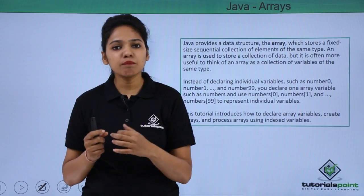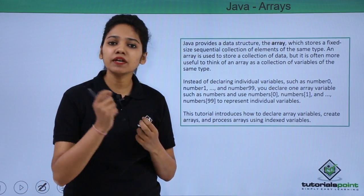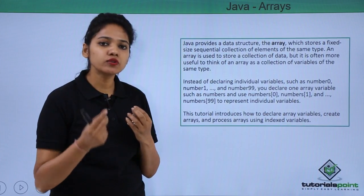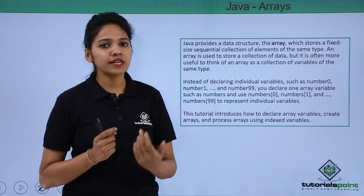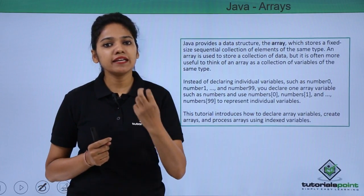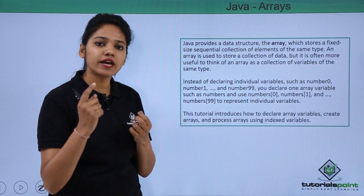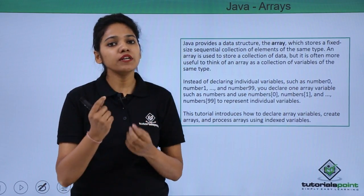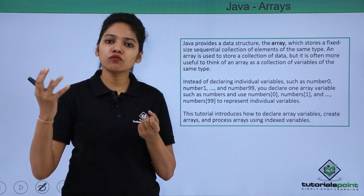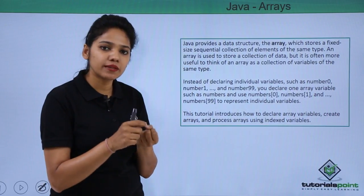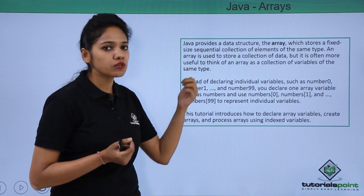An array is nothing but a fixed number of elements. Elements here means a fixed number of values that an array will hold. You can declare a variable, for example an integer type where you say a is equal to 10. Therefore, a will be holding only one value of integer type. What if you want one variable to hold a collection of values? It is possible through the use of an array.